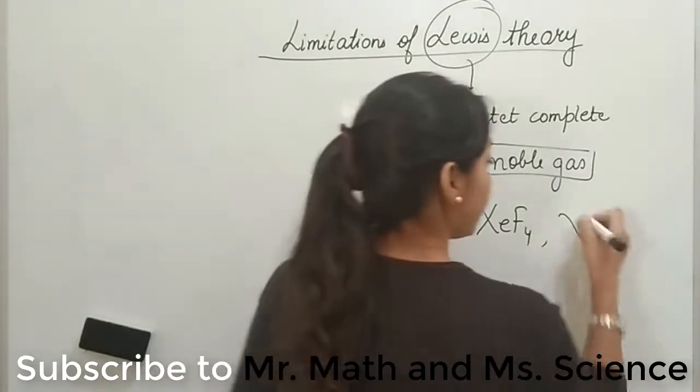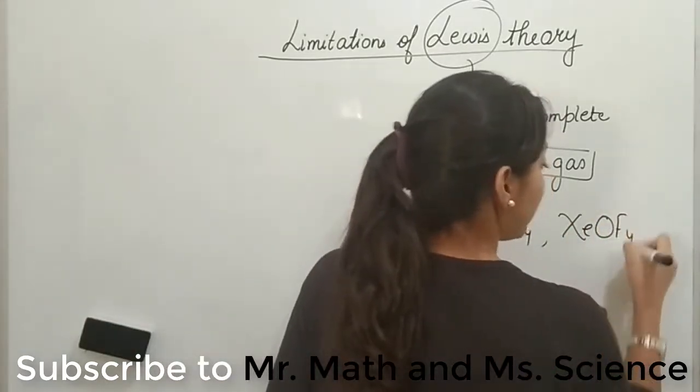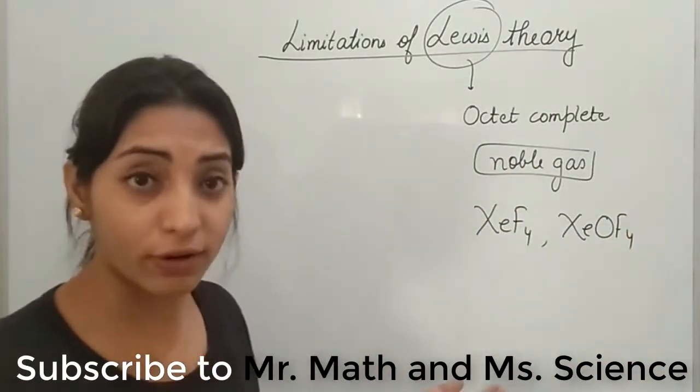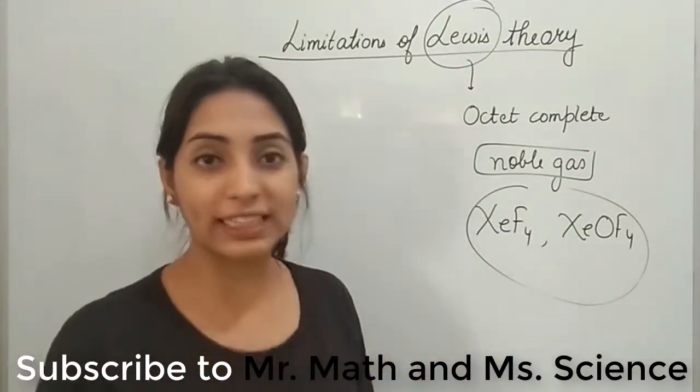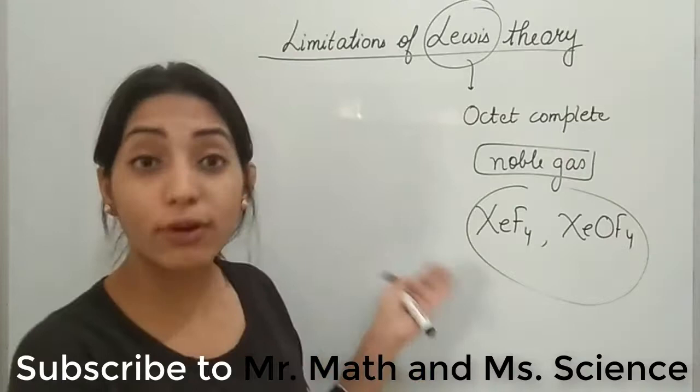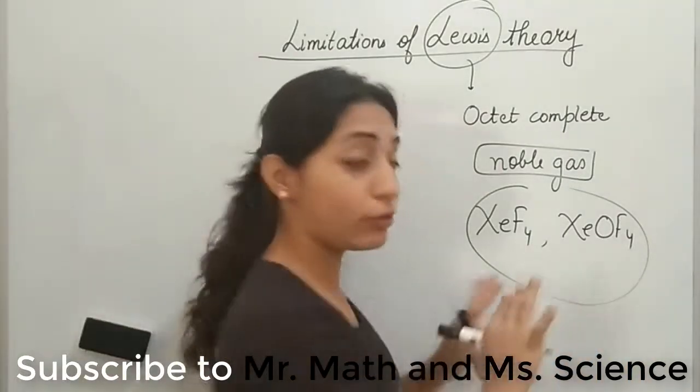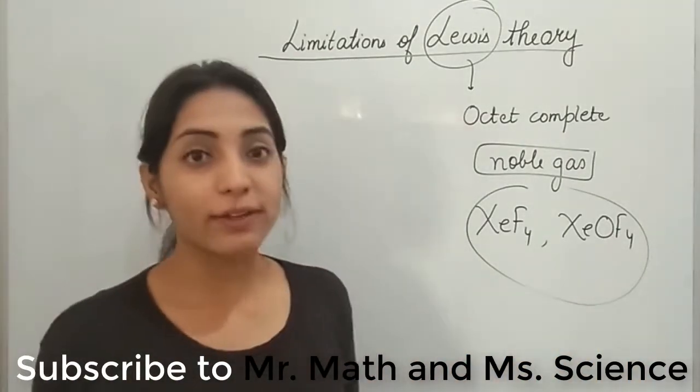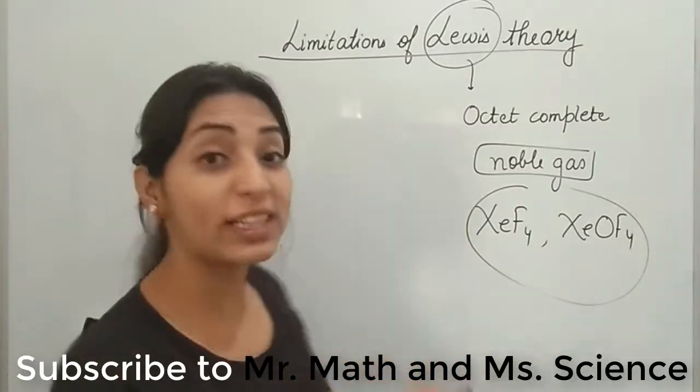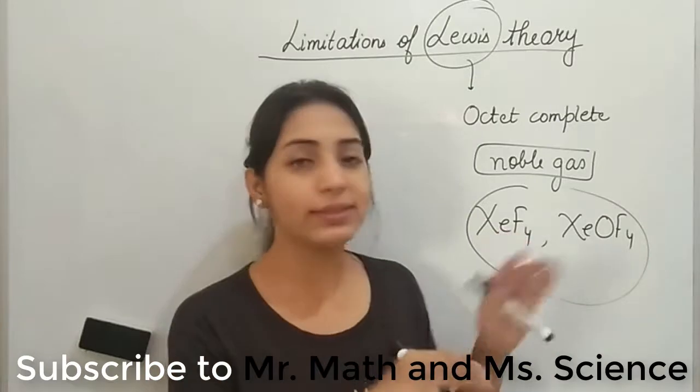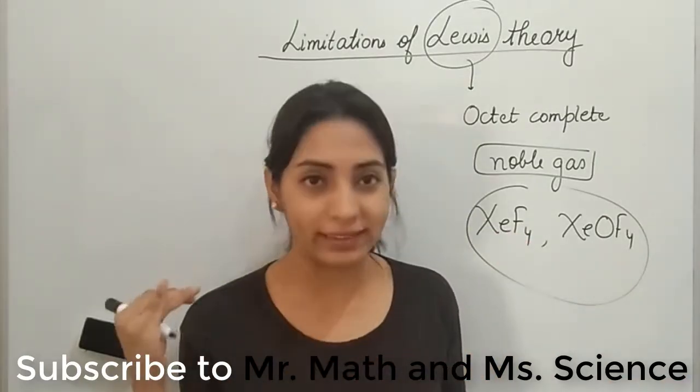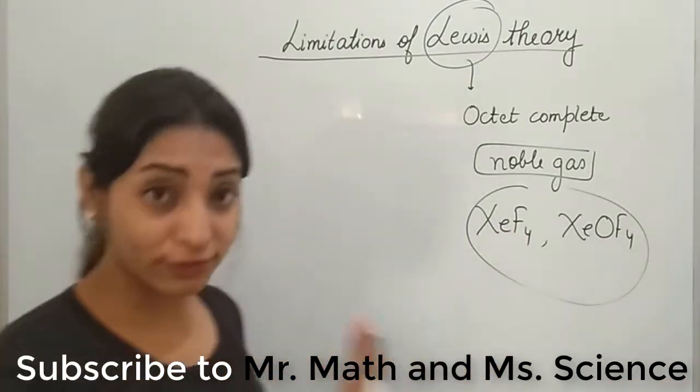Not only one molecule, there are so many molecules which are formed by xenon. So our Lewis dot theory could not explain the existence of such molecules. According to him, these molecules should not be formed. But if you look at nature, these molecules do exist. Question mark, why do they exist? Lewis had no answer, so it failed. So this was the first limitation.